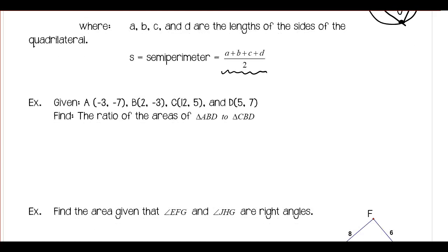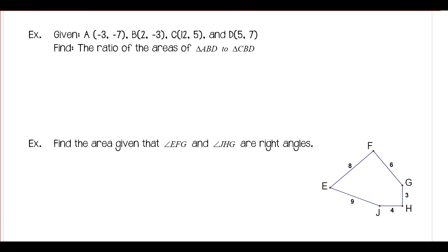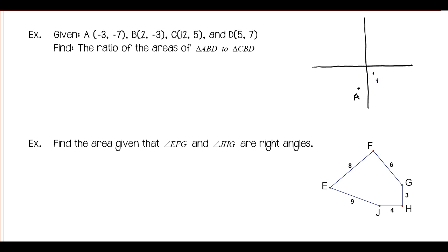You may want to take out a separate sheet of paper because there may not be enough room. We're given four points and we want to find the ratio of certain triangles. Making a quick sketch: negative 3, negative 7 is point A; 2, negative 3 is point B; 12, 5 is point C; and 5, 7 is point D. From the sketch, it looks like points A, B, and C might be collinear, which would make the problem easier to solve.